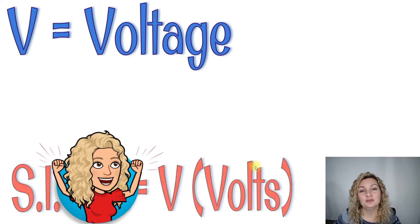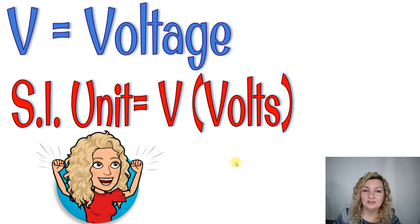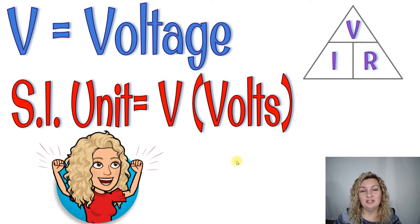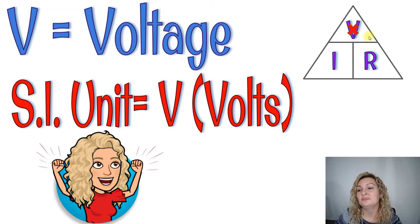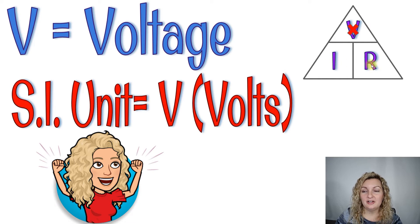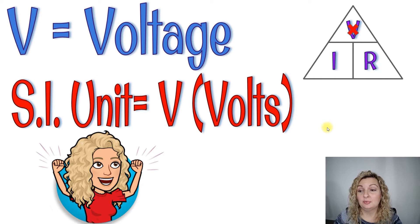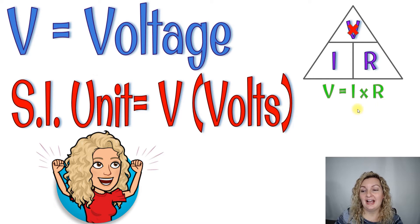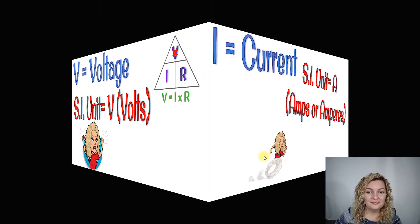So our first variable is V, which is for voltage, and the SI unit for voltage is volts — you can just write a V for that in your units. Now when you see this on the triangle, if you are looking for volts, you're going to cover up that V. You can see that I and R are left, and they are next to one another — side by side. If they're side by side, just like in math class, we multiply. So V equals IR, or I times R.